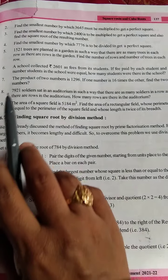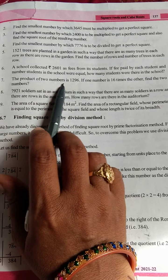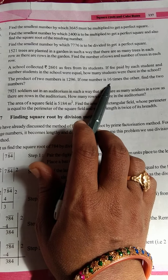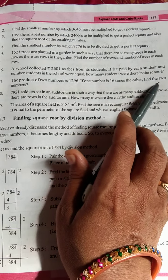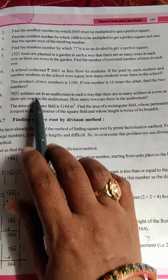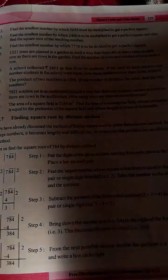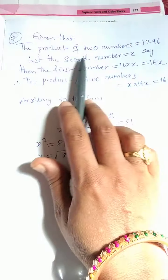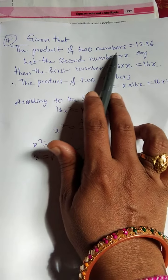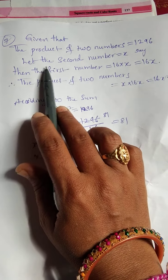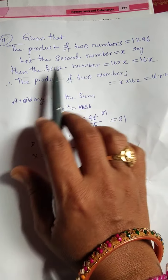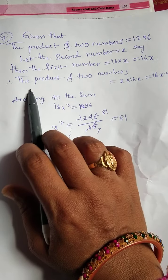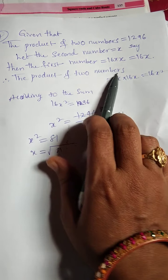Next question — the seventh one. The product of two numbers is 1296. If one number is 16 times the other, find the two numbers. Given that the product of two numbers is 1296, let the second number be x, then the first number is 16 times x, i.e., 16x.